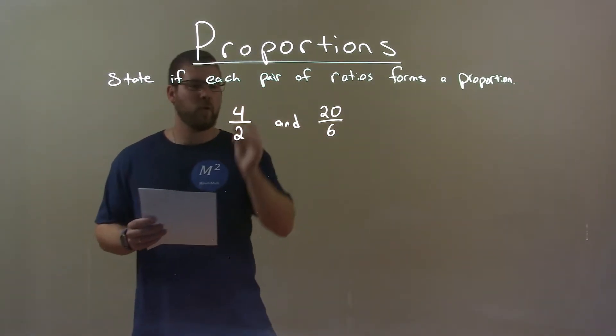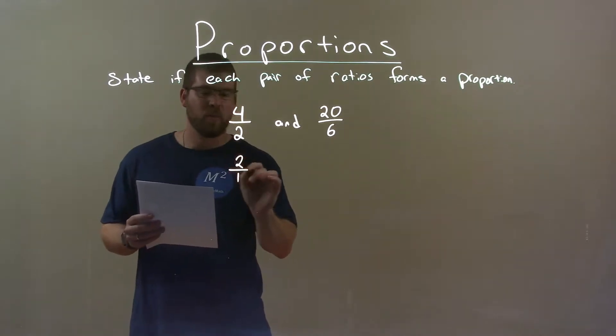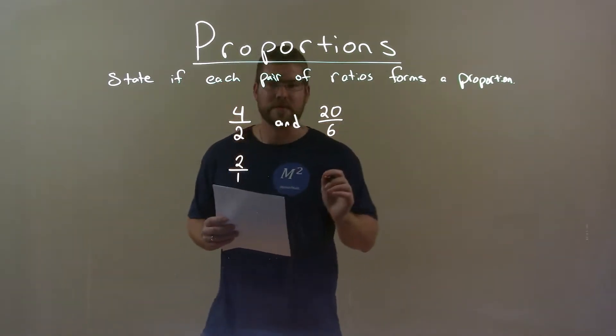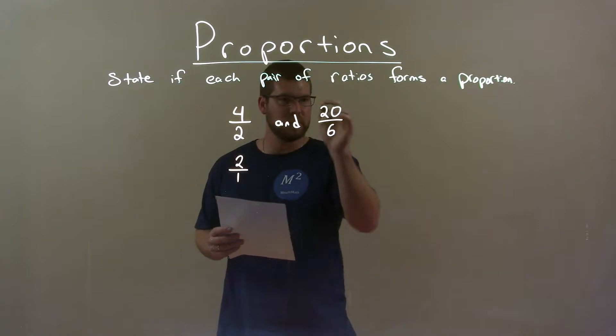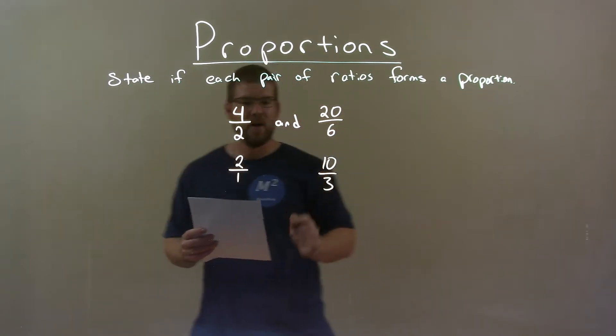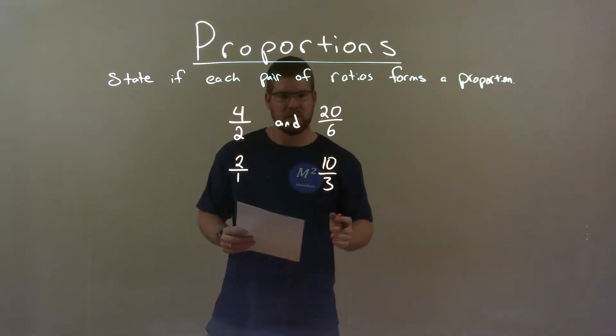So 4 divided by 2 is the same thing as 2 over 1. 20 over 6 though, both are divisible by 2, so we have 10 over 3. We cannot simplify that proportion anymore.